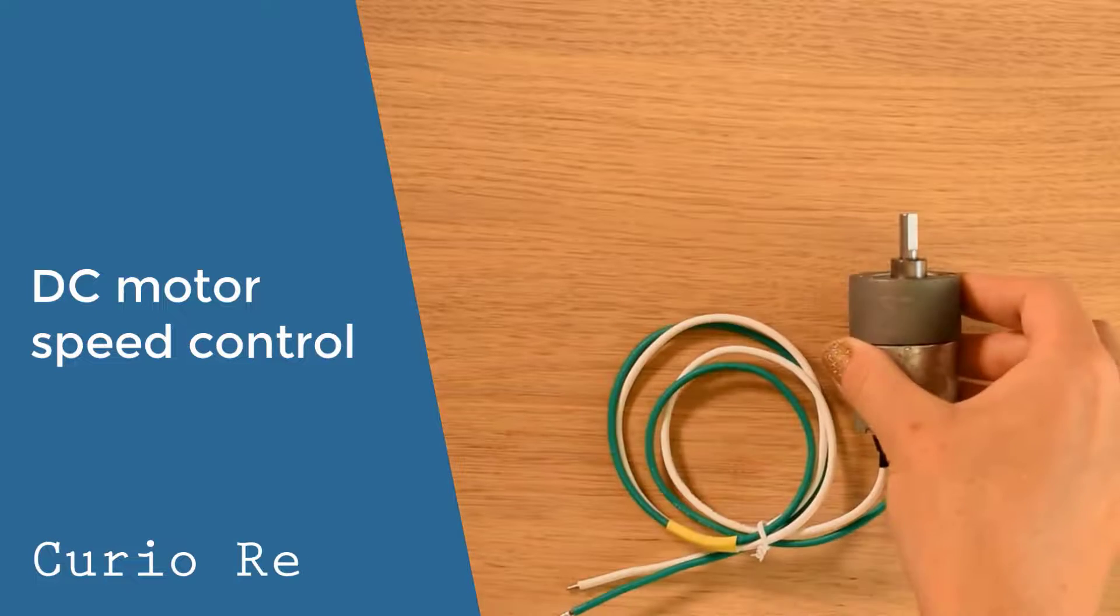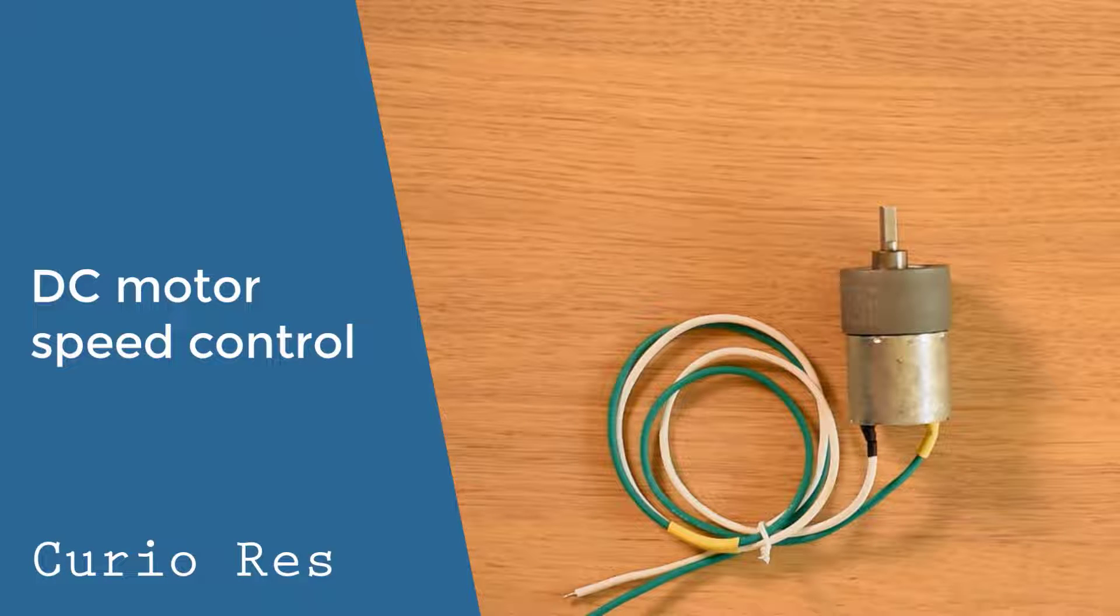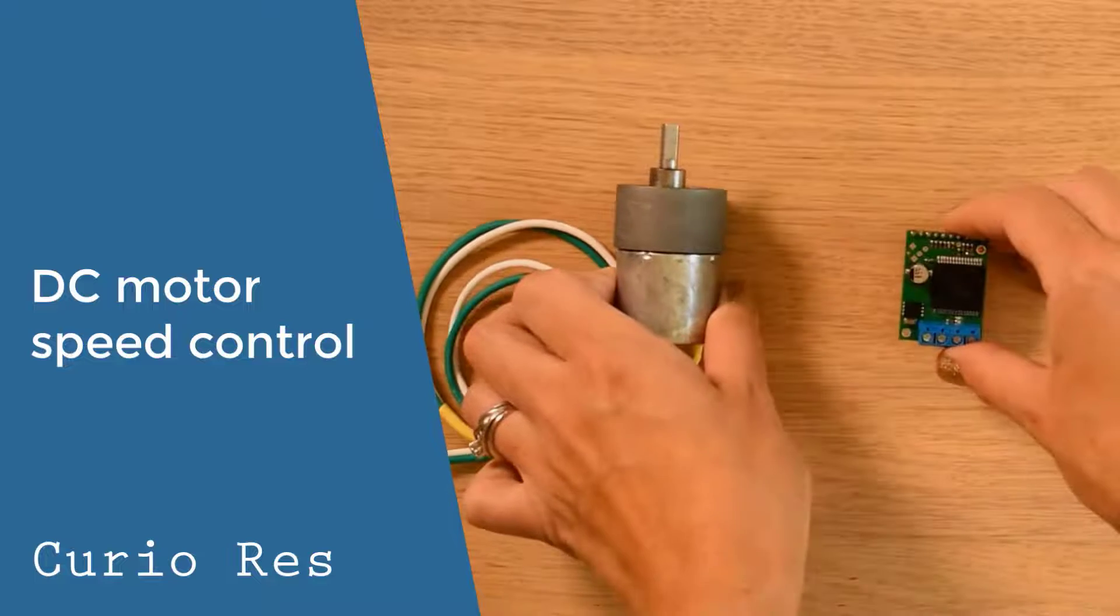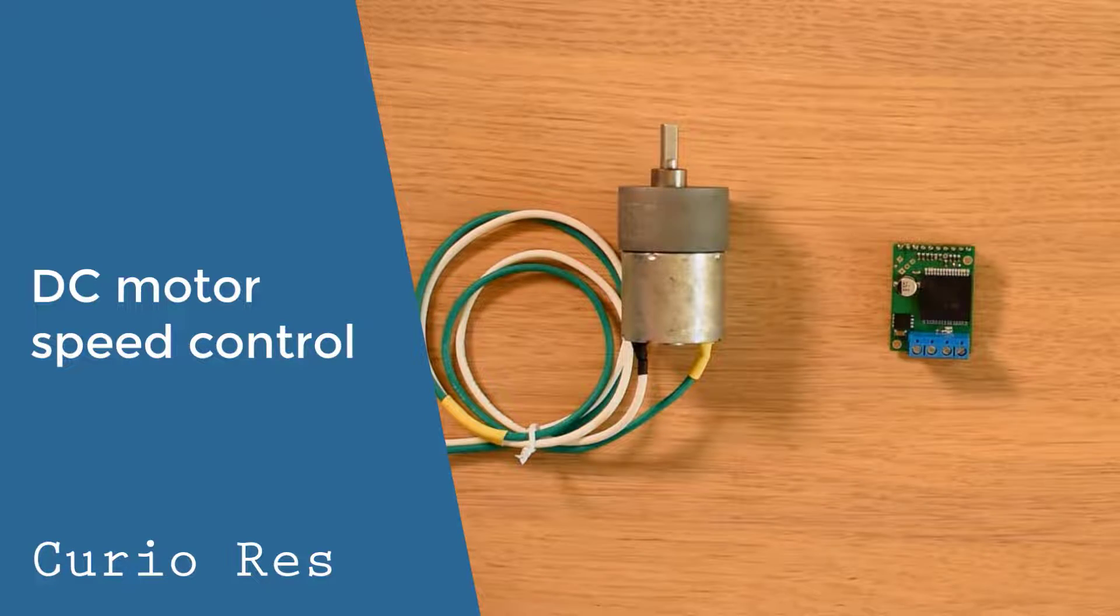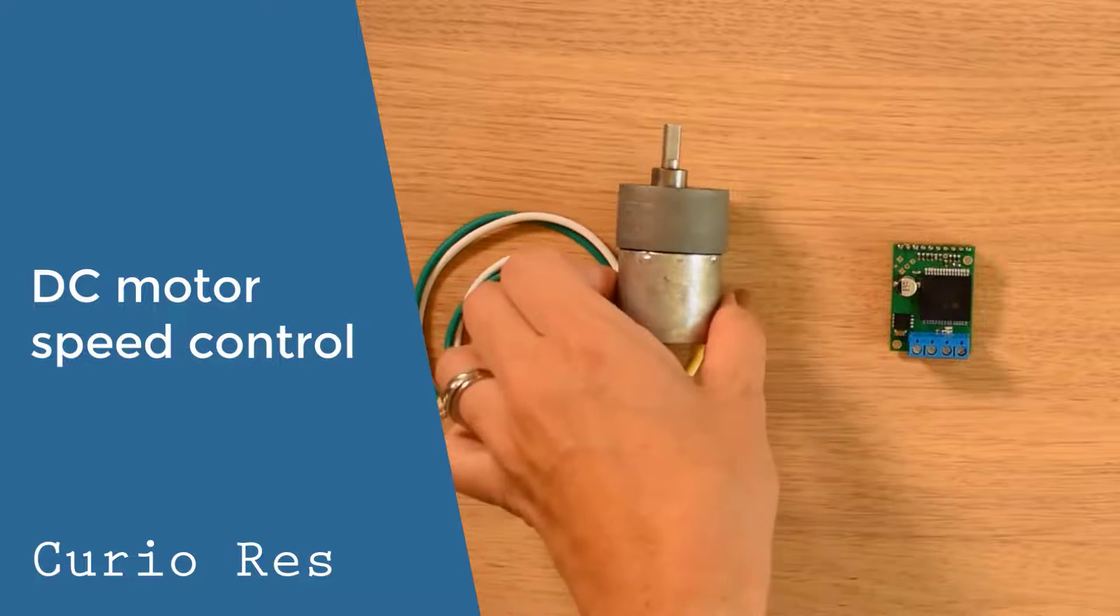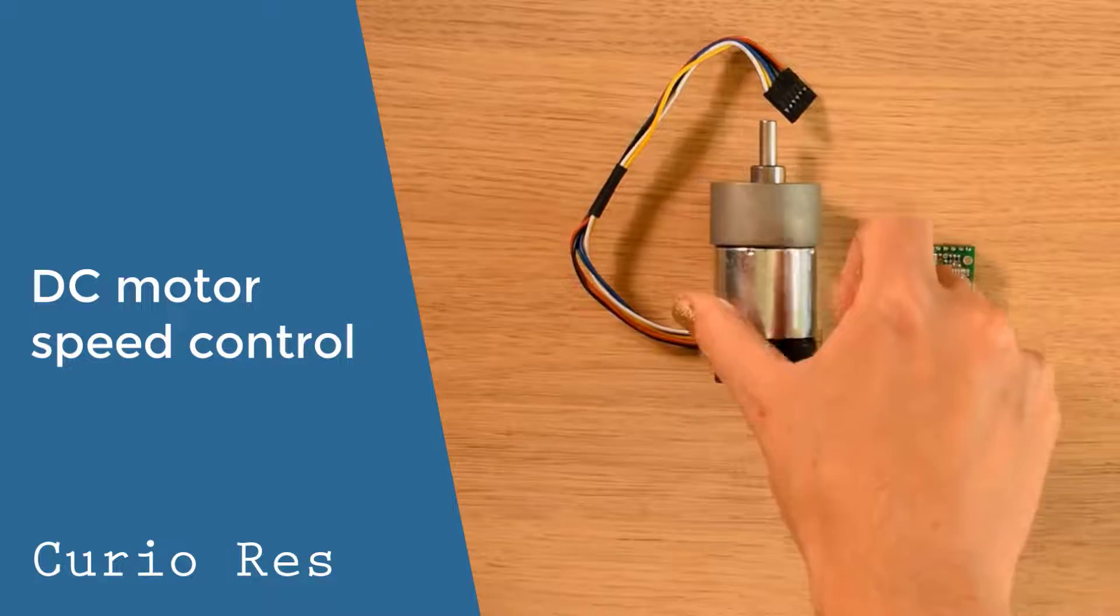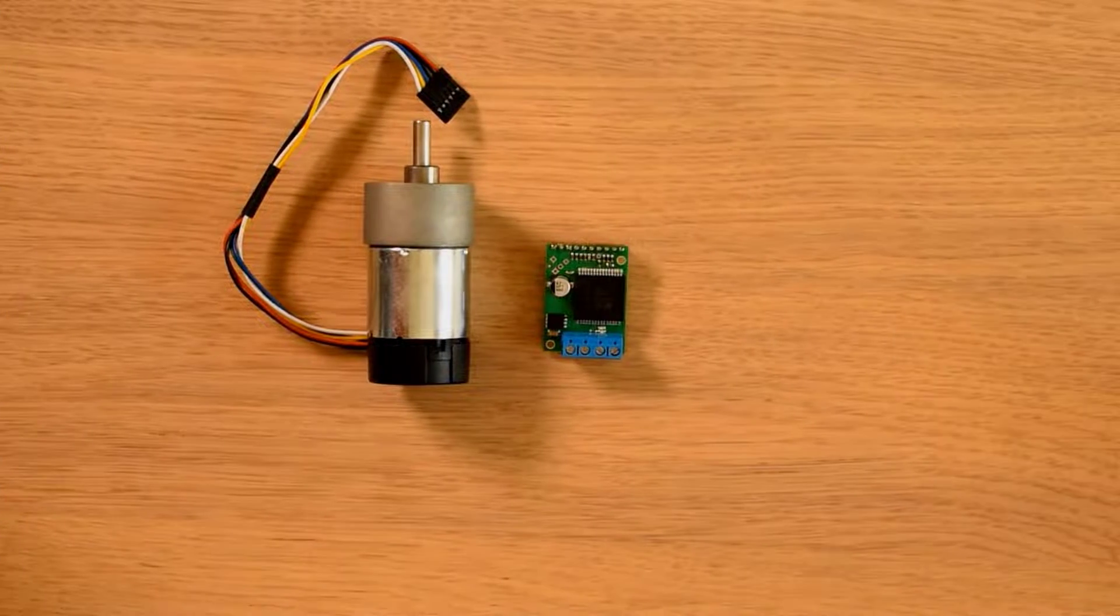DC motors have a wide range of applications, from garage door openers to robots. You can control a DC motor speed using a simple PWM motor driver. However, such control is imprecise, and the speed will vary depending on the loading conditions.